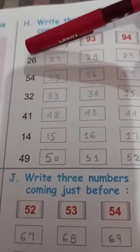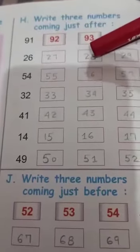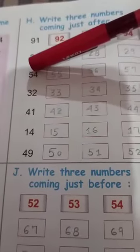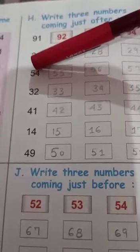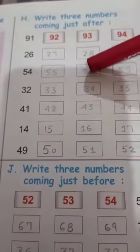Ok 26, forward counting of 26 is 27, 28, 29. Just like that 54, forward counting of 54 is 55, 56, 57.